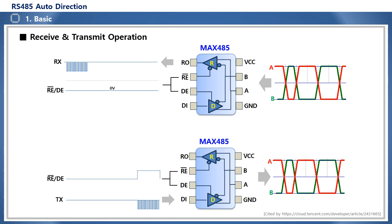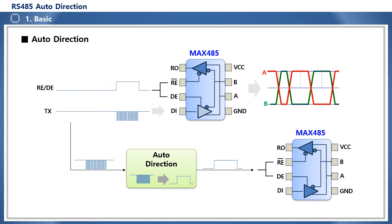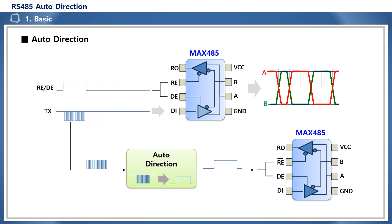The transceiver IC MAX485 requires transmission and reception mode settings in order to selectively transmit and receive on the A and B differential communication lines. This mode setting is operated by the receiver-enable RE pin and the driver-enable DE pin. If both of these pins are low, it is reception mode, and if both are high, it is transmission mode. The auto-direction circuit automatically outputs logic high while there is a TX packet signal from the MCU, and outputs logic low when there is no TX packet signal.